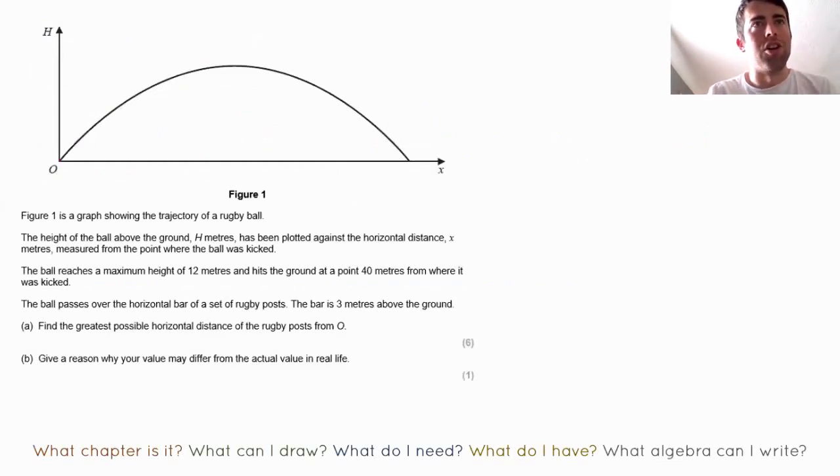We have a graph of the trajectory of a rugby ball, its height above the ground against the distance away from where the ball was kicked. So the ball was kicked from here and hits the ground down there. Okay, before we go any further I think I already know what chapter this is. I know that the flight of something under gravity, the trajectory is a parabola, a quadratic. So I think this question is about quadratics.